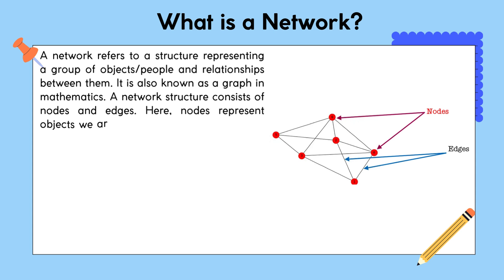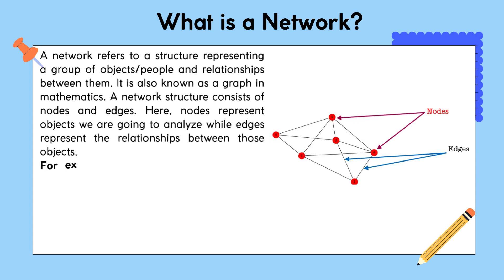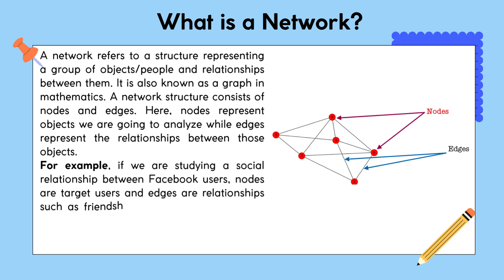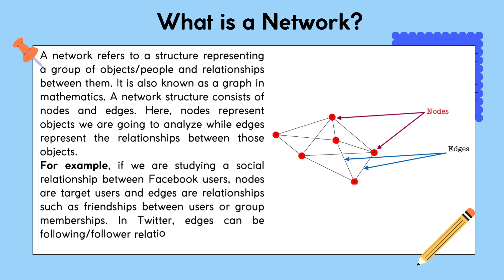A network structure consists of nodes and edges. Nodes represent the objects we are going to analyze, while edges represent the relationships between those objects. For example, if we are studying a social relationship between Facebook users, nodes are the target users and edges are relationships such as friendships between users or group memberships.